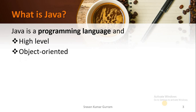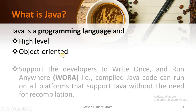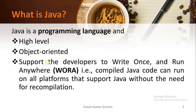Java is also an object-oriented programming language. If any programming language provides features like class, object, abstraction, encapsulation, polymorphism, and inheritance, such a programming language is called an object-oriented programming language. Java provides all the object-oriented features.